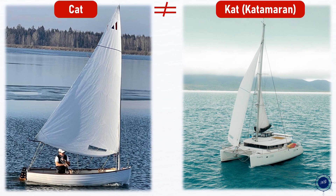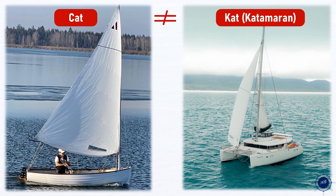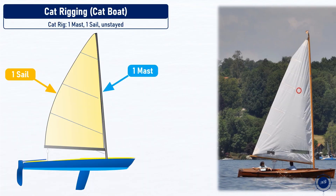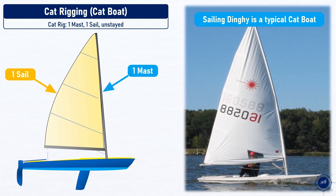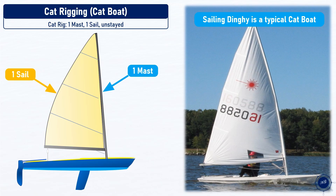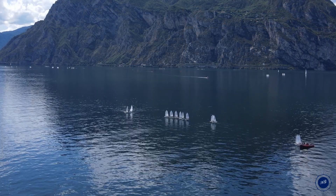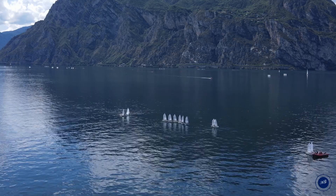Cat is not to be confused with cat — a catamaran. A sailing dinghy is a catboat that used to be a small, round-hulled boat without a fixed keel. Until the 19th century, sailing dinghies were built as sharp stern boats, later with the typical transom.